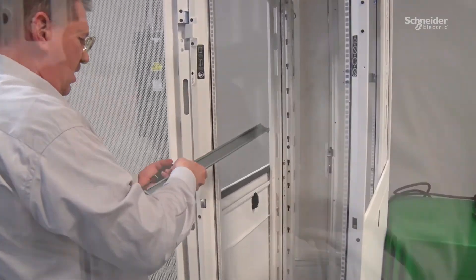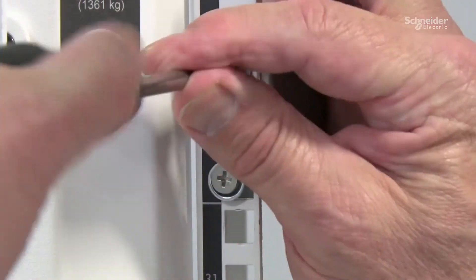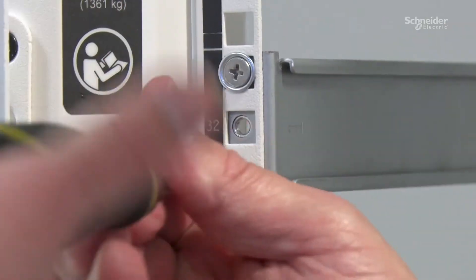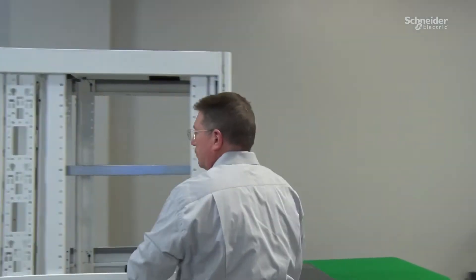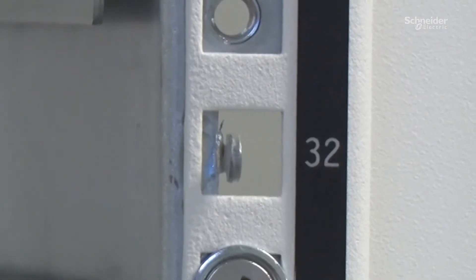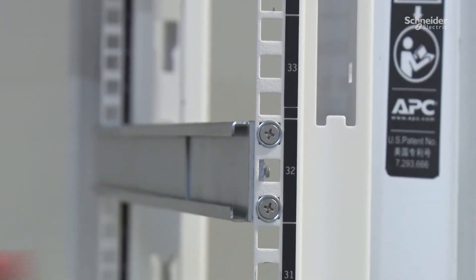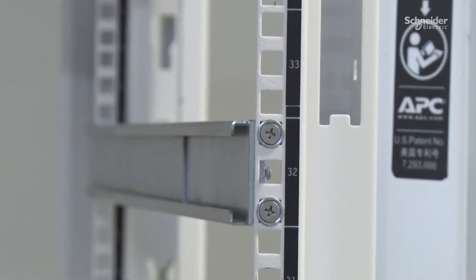Now, typically you would see these in a much lower position, but this will help us. And then in the rear where we can see that tab actually supporting. So now our rails are supported and we can install the UPS.